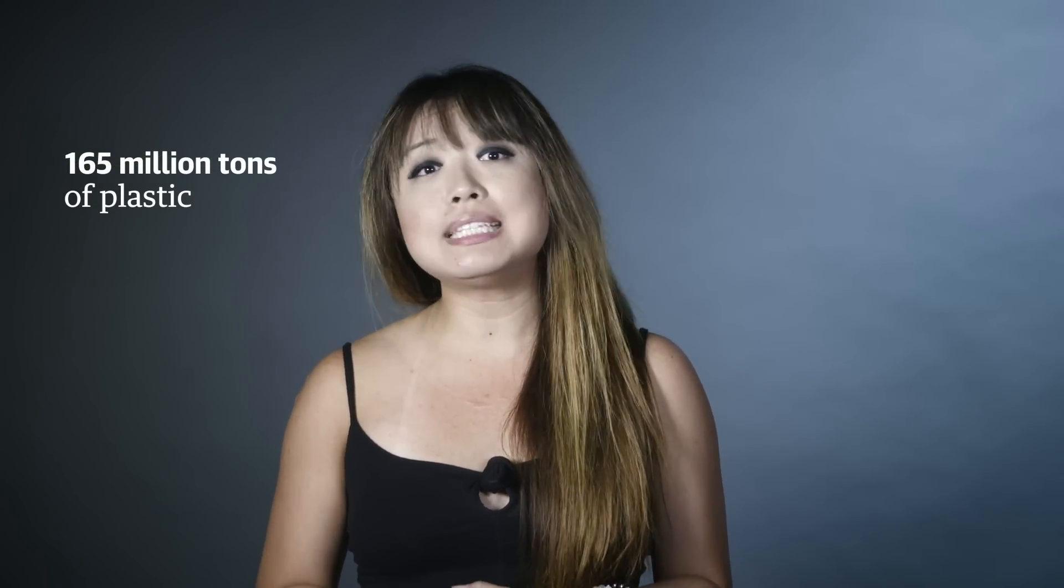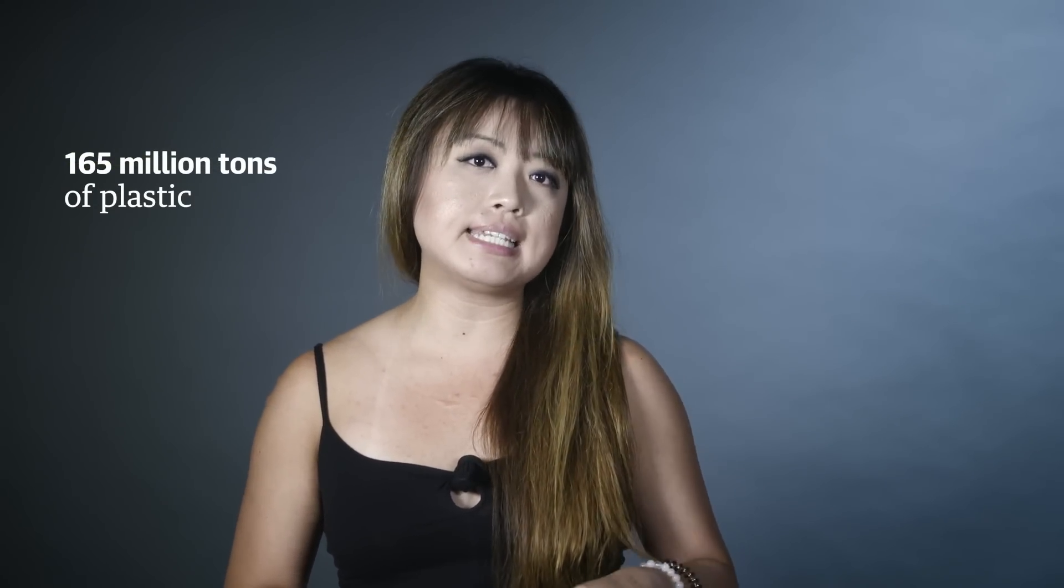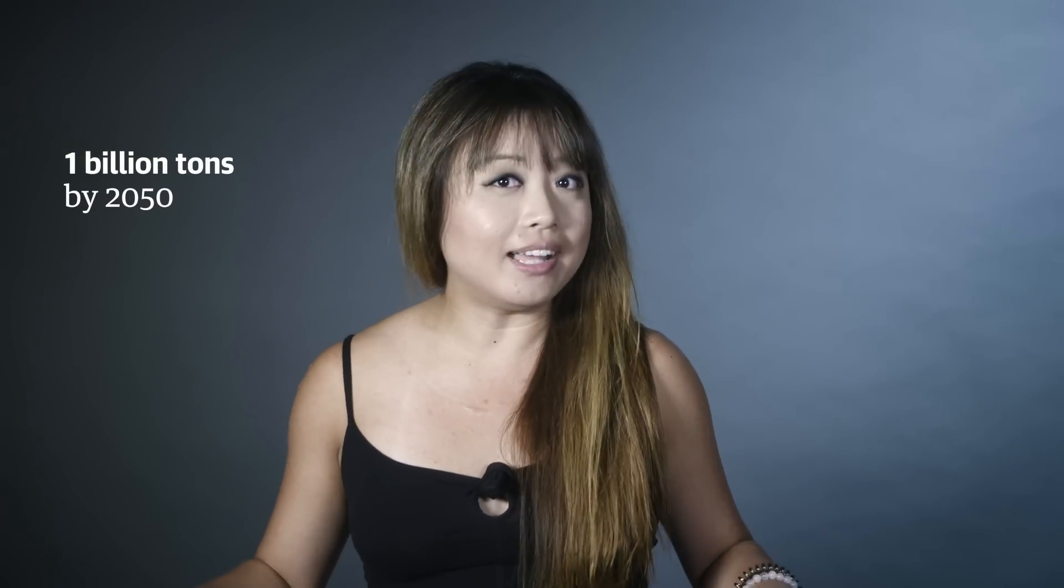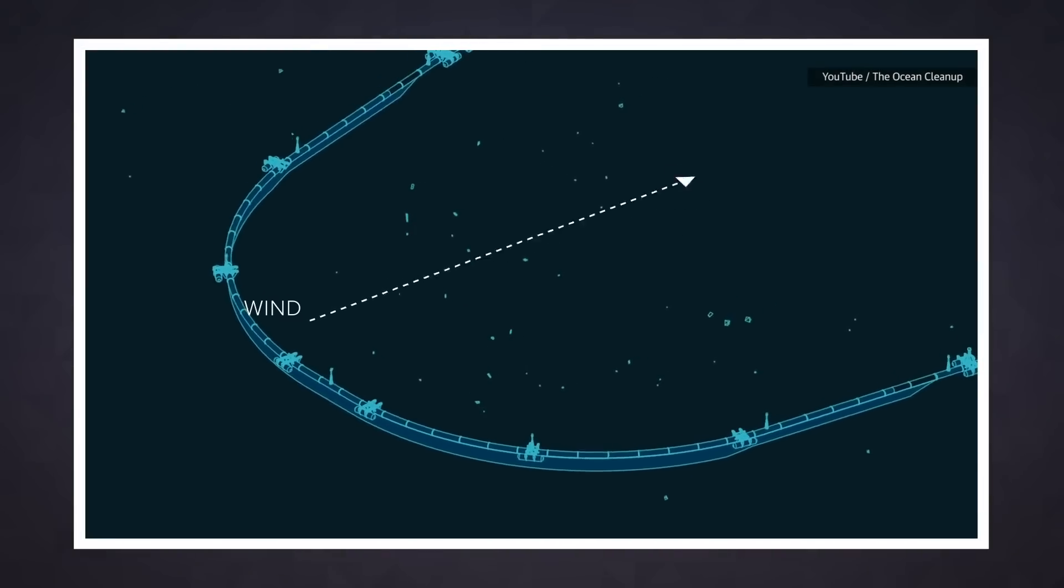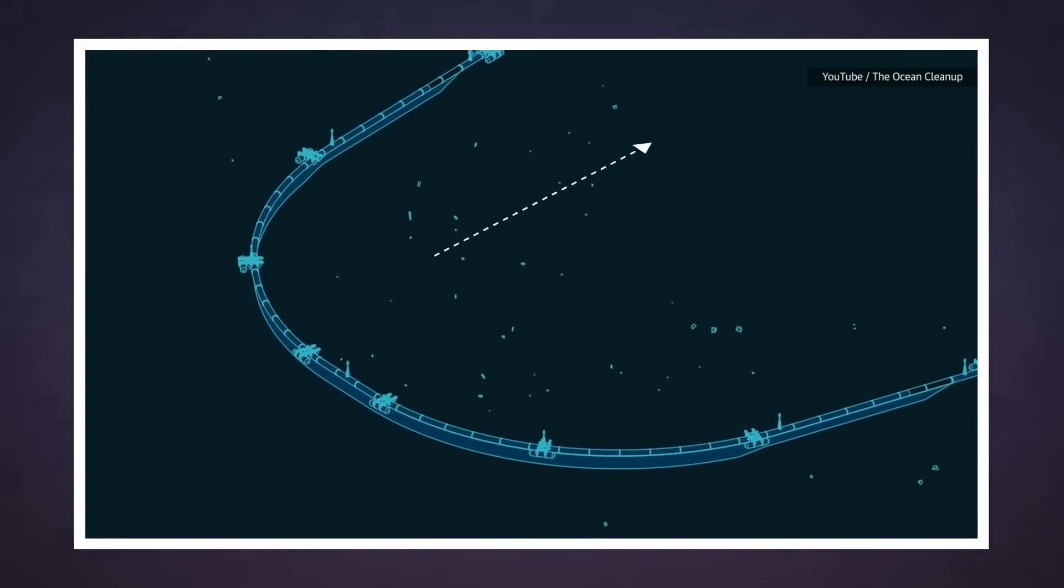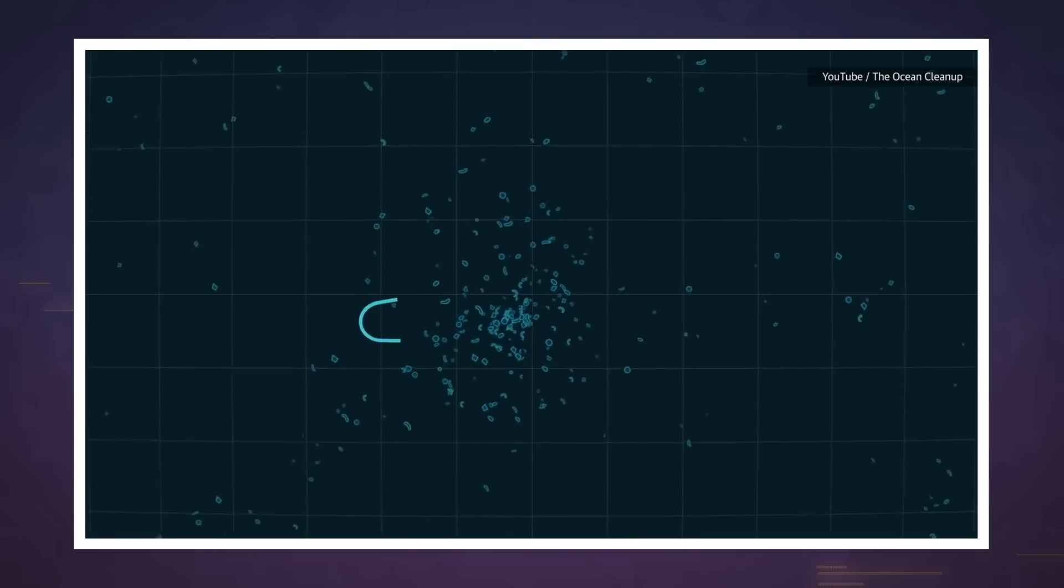Even if the ocean cleanup project is successful, this will only put a small dent in a huge global problem. There are an estimated 165 million tons of plastic in the ocean today, and that's expected to balloon to a billion tons by 2050. At best, System 001 will be able to extract about 55 tons of plastic from the ocean per year.